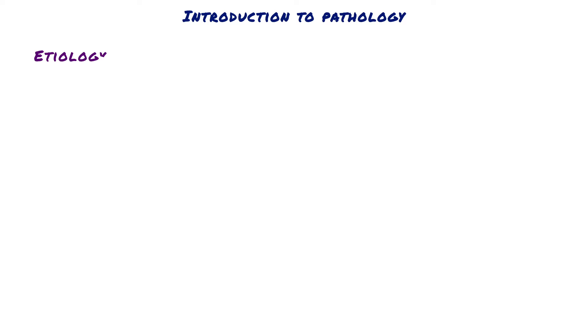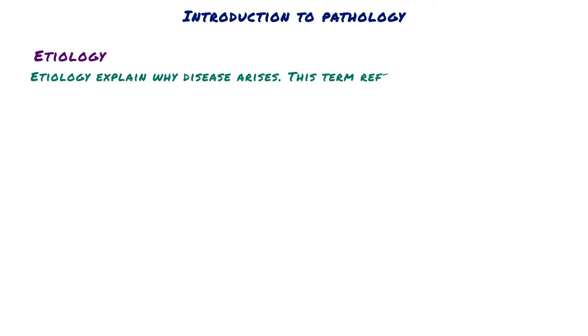The first one is etiology. Etiology explains why disease arises. The term refers to the underlying causes of disease.